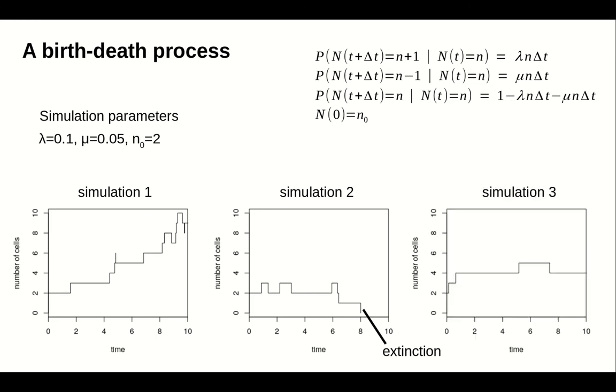In a third simulation, we observe an intermediate result. The population has 2 births early on, then stays around 4. It hasn't gone extinct yet, but stays precariously low.